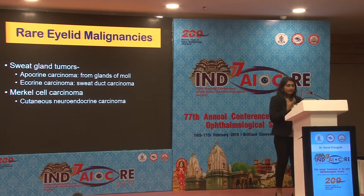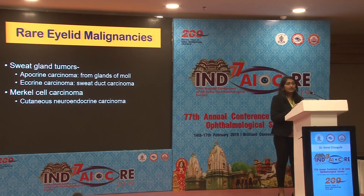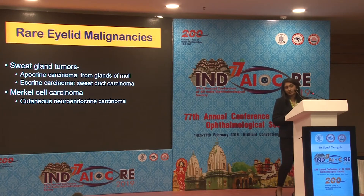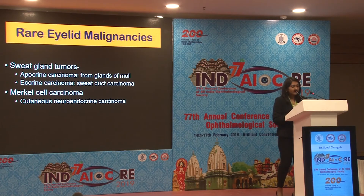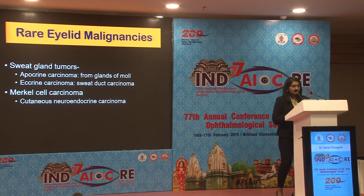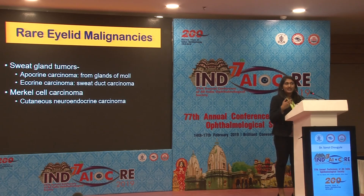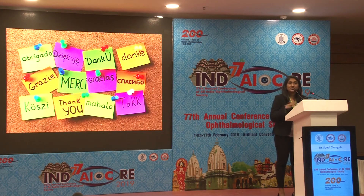Quickly enumerating other rare eyelid malignancies: apart from the four major malignancies seen frequently in an oculoplasty or oncology clinic, you also sometimes come across sweat gland tumors — apocrine carcinomas or eccrine carcinomas arising from the glands of Moll or sweat duct carcinomas, respectively. Another variant arising from the basal cell of the epidermis, quite rare but more common after immunosuppressive therapy or prior radiation therapy, is Merkel cell carcinoma, also known as cutaneous neuroendocrine carcinoma. I have tried to summarize the main malignant tumors, and Dr. Farrukh will take it ahead with the management plan and options for all of these. Thank you for your patient listening.